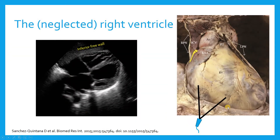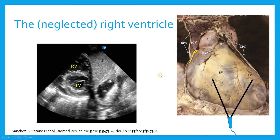If you look at it from the subcostal view — putting your probe looking up — you're really mostly looking at the inferior free wall of the RV. In a subcostal parasternal short axis view, you're getting a bit of both the inferior and anterior wall.